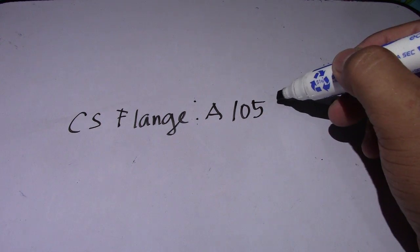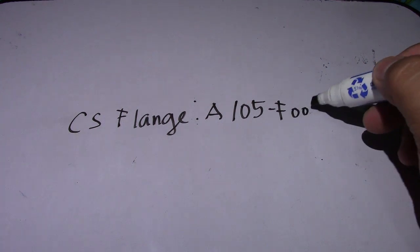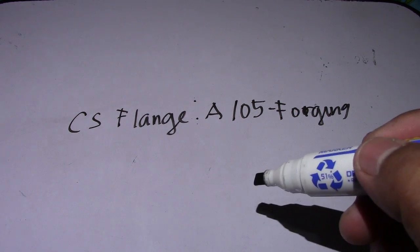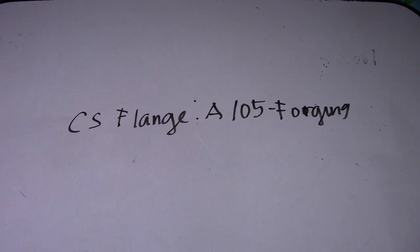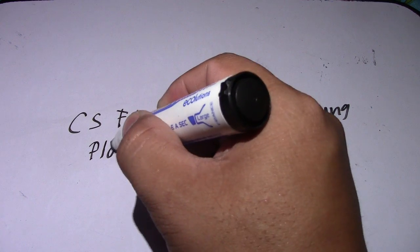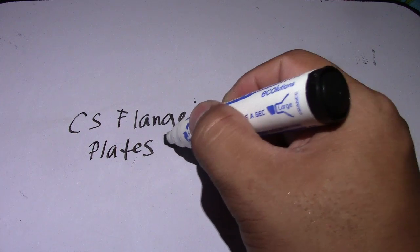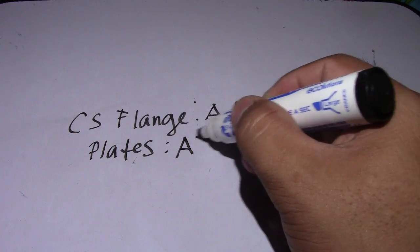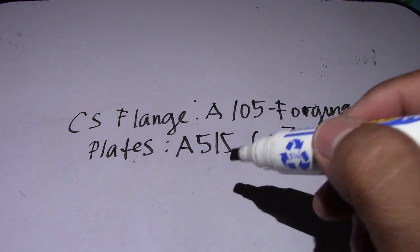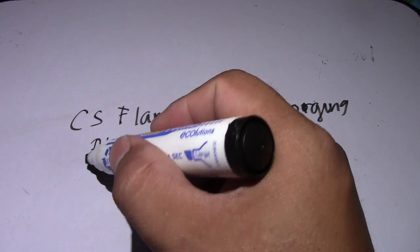This is forging. We also have plates. For the plates, we have a specification of A515 Grade 70. This is for the plates. Next is SS.